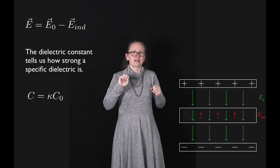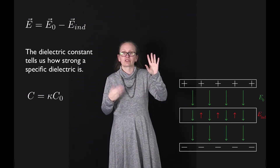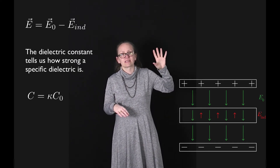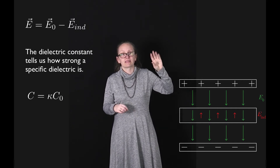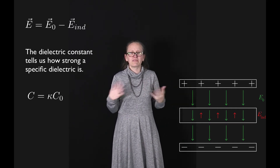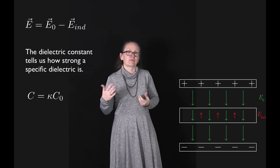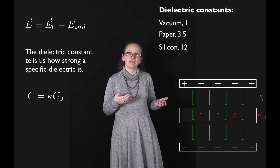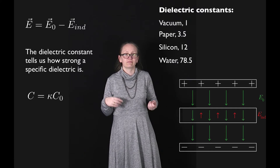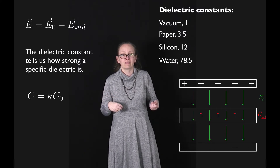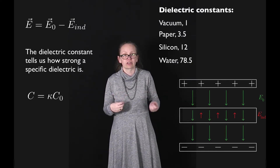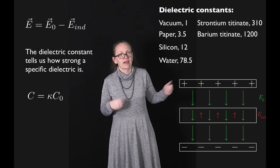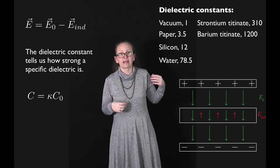The dielectric constant tells us how much the capacitance changes. We can say that the capacitance is given by the dielectric constant — represented by the Greek letter kappa — times the capacitance without the dielectric, C₀. To give you an idea of the values: vacuum has a dielectric constant of 1, paper 3.5, silicon 12, water at 25°C is 78.5, and special materials like strontium titanate are around 310, and barium titanate around 1200.